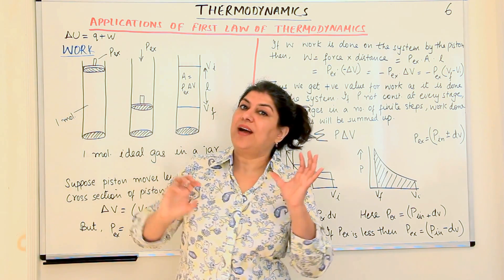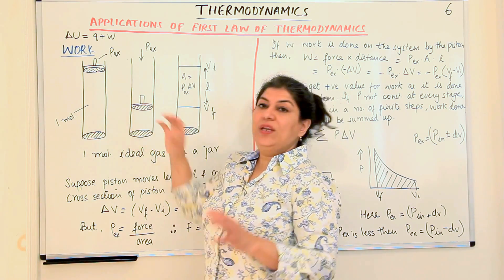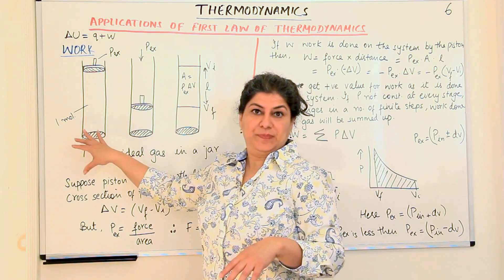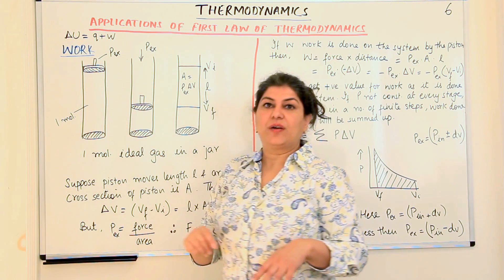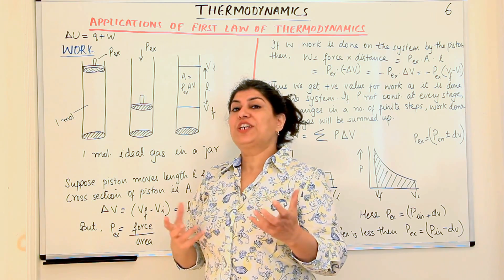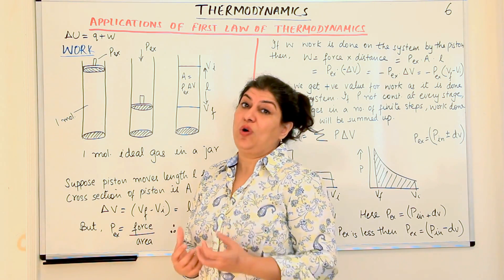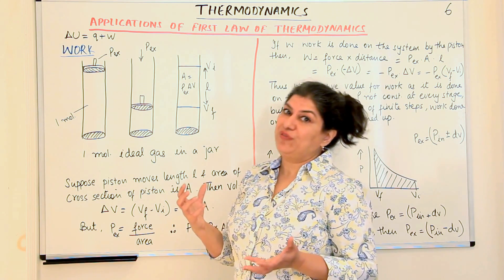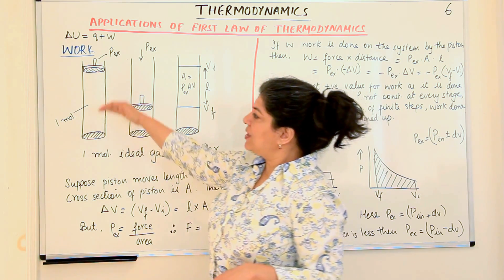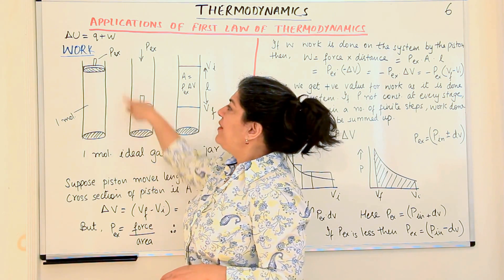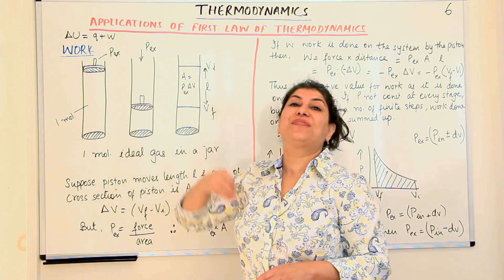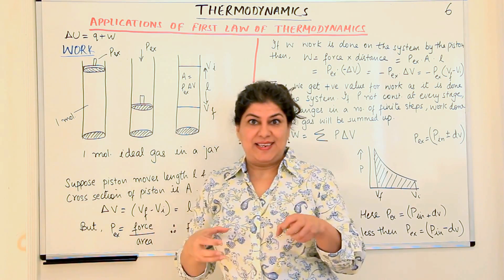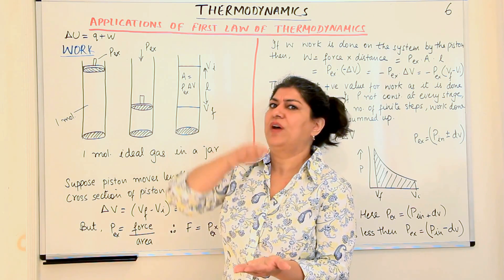Let us take an example to understand pressure-volume work. We are not carrying out a chemical reaction here — we just took one mole of an ideal gas in a jar. The volume of one mole of gas at STP should be 22.4 litres, but let us imagine the jar has a volume much greater than this. The jar is fitted with a frictionless piston that can move up and down very easily but seals the gas inside.